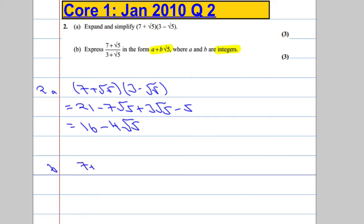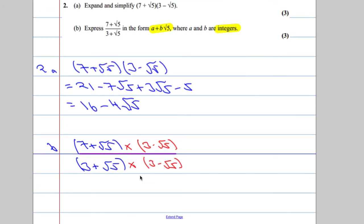Well, we take the 7 plus root 5 over the 3 plus root 5, and we're going to multiply top and bottom by this expression. I'm going to write it in red, so that was the original fraction. We're going to multiply above and below by the same thing, and we're going to multiply top and bottom by 3 minus root 5 over 3 minus root 5. Now, if you look back to part A, we've actually done some of the work.